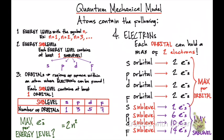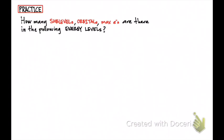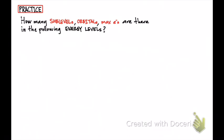You can use this equation to determine the maximum number of electrons per energy level. Let's do a little practice. How many sublevels, orbitals, and maximum number of electrons are there in energy levels 1, 3, 5, and 7? To determine the number of sublevels per energy level, the number of sublevels matches the energy level — so level 1 has 1 sublevel, level 3 has 3 sublevels, level 5 has 5 sublevels, and level 7 has 7 sublevels.